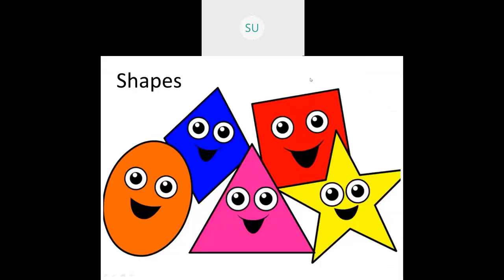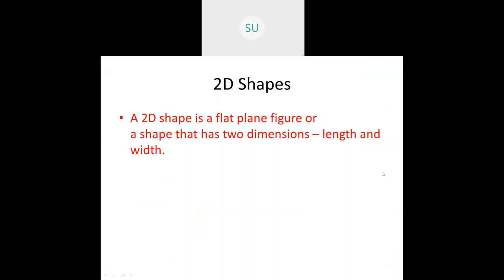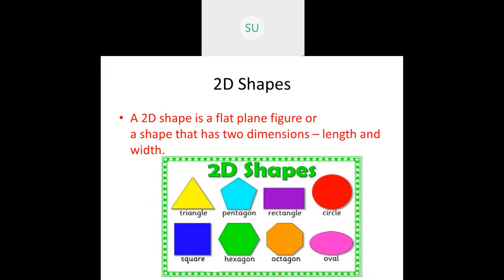Plane figures are flat shapes which have only two dimensions — they are called 2D shapes or plane figures. A 2D shape is a flat plane figure that has two dimensions: length and width.